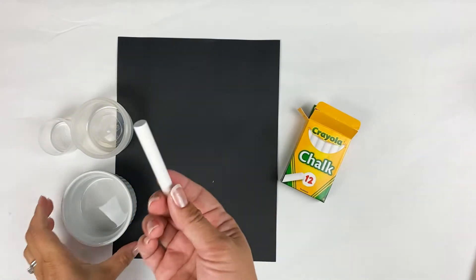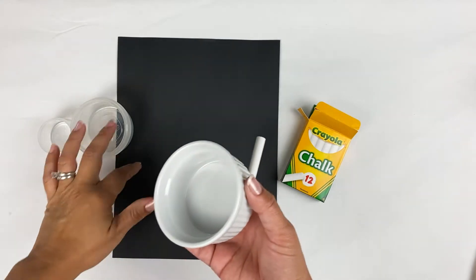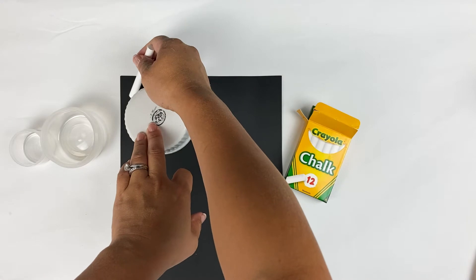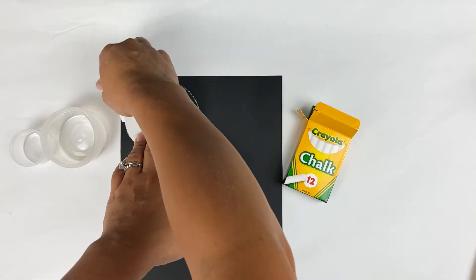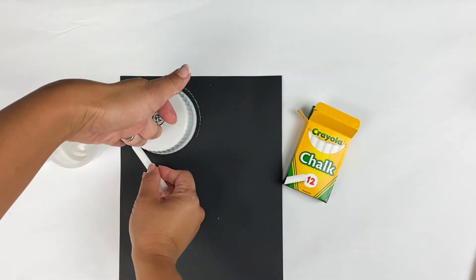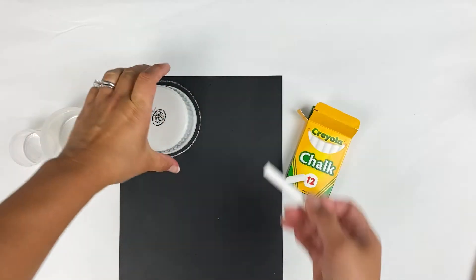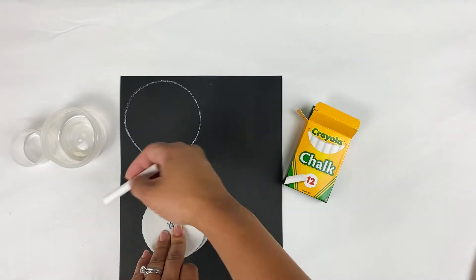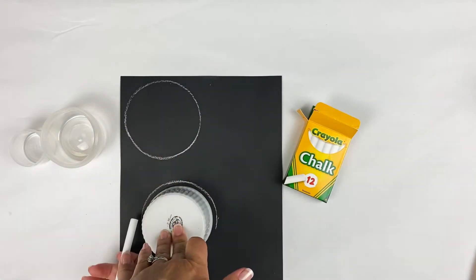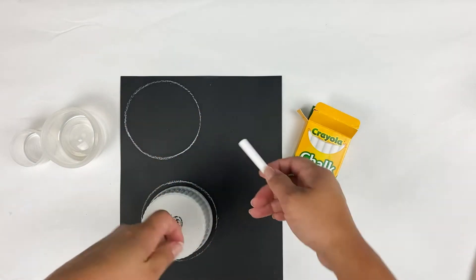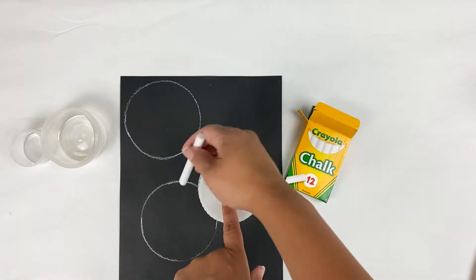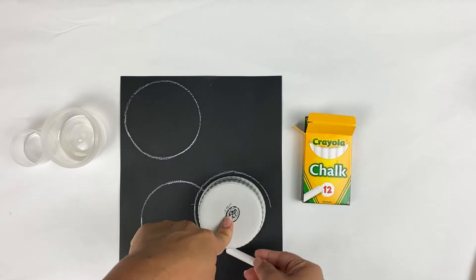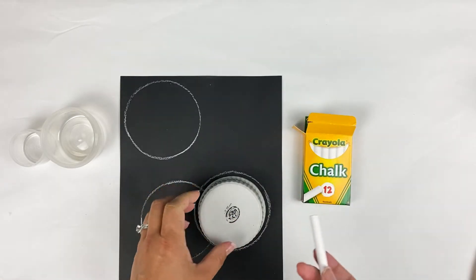So first you take your white chalk and you just make some circles. Putting whatever it is you're using to make your circles on your paper and then tracing around it. There's one circle, another circle, and just have fun with it. And you can even overlap them. That's okay too. Make as many as you like.